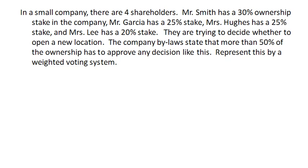We're going to represent this with what's called a weighted voting system. The idea here is that there is a vote happening, but each person has a different weight or influence in the election. In this case, Mr. Smith has a larger say in the result than Mrs. Lee.